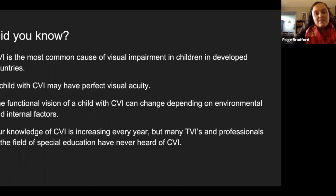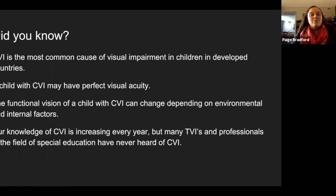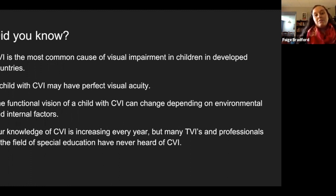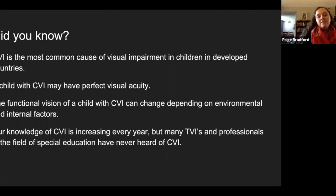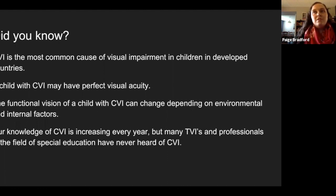I wanted to start with some fast facts because people are not always aware of CVI and how it impacts students. CVI is actually the most common cause of visual impairment in children in developed countries. We're finding that students who might have varying disabilities aren't being diagnosed until they're 10, 11, or 12 years old, meaning they've lost many years of learning to use their vision. A child with CVI can also have perfect visual acuity, which makes it more difficult to diagnose. The functional vision of a student with CVI can also change depending on environmental and internal factors — it's very fluid.